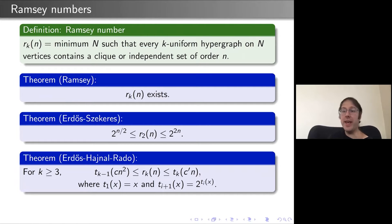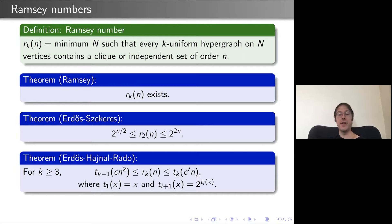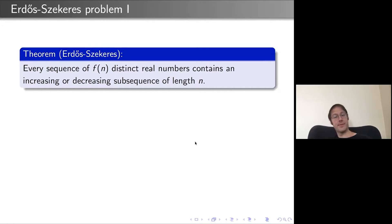For higher uniformity when K ≥ 3, we know even less. Results of Erdős, Hajnal, and Rado show that R_K(n) is at most an exponential tower of twos of height K−1, and at least a tower of height one less in n squared. It's conjectured that the upper bound is correct. For four or more colors, it's known that the upper bound is achieved.